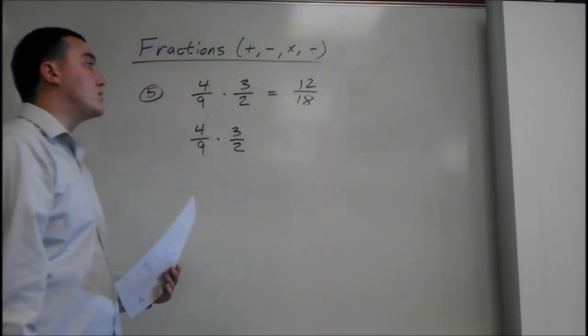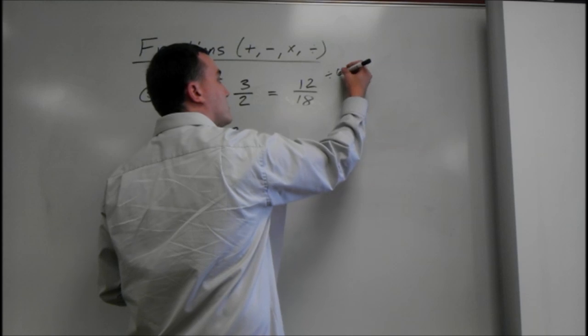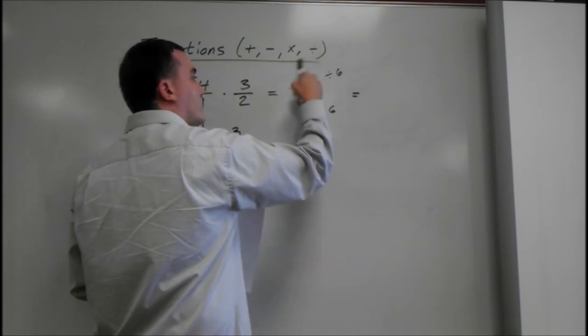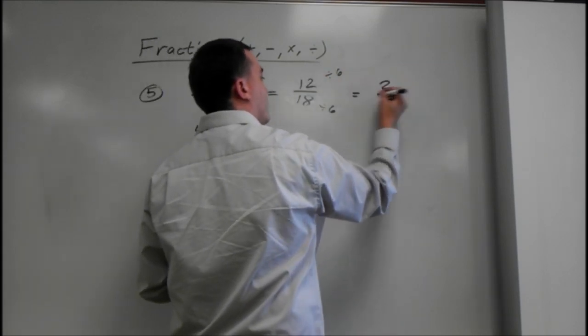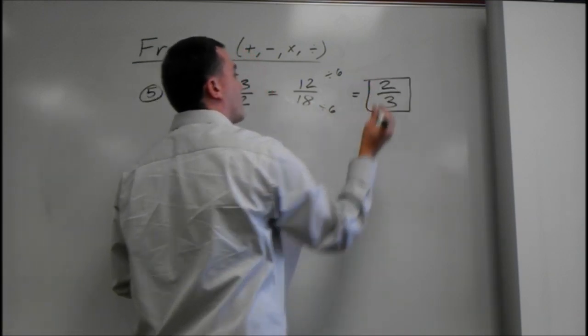And then we also know that 6 goes into both of these. So, we divide by 6 on the top and bottom. 12 divided by 6 is 2 over 18 divided by 6 is 3. 2 thirds. That will be our answer.